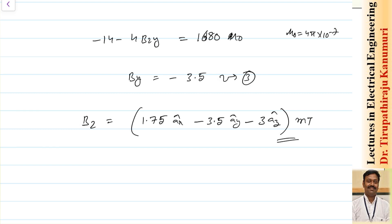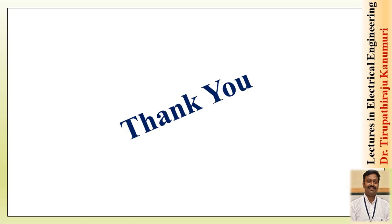To find the angle in the second medium, use tan theta1 divided by tan theta2 equals mu1 divided by mu2. I hope the magnetic boundary conditions — how a magnetic signal behaves when crossing from one material to another — are now clear. If you have any queries, please leave comments below. Thank you very much.